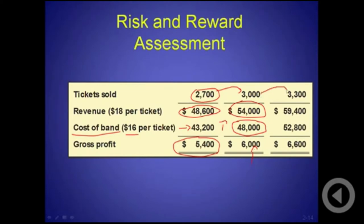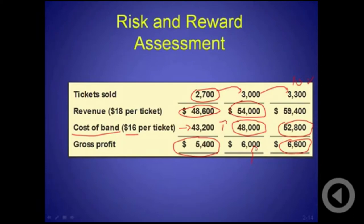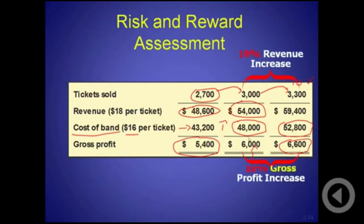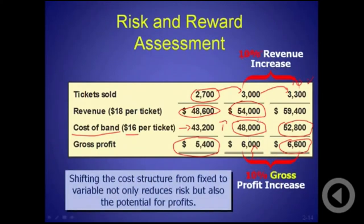If we increase the sales tickets by 10% to 3,300: revenue is 3,300 times $18, and the cost also increases — 3,300 times $16. Notice that when cost was fixed, every time we increased revenues by 10%, gross profit increased much more. But with variable cost, a 10% increase in revenues only gives you a 10% increase in gross profit. Shifting the cost structure from fixed to variable not only reduces risk, but also reduces potential profit.